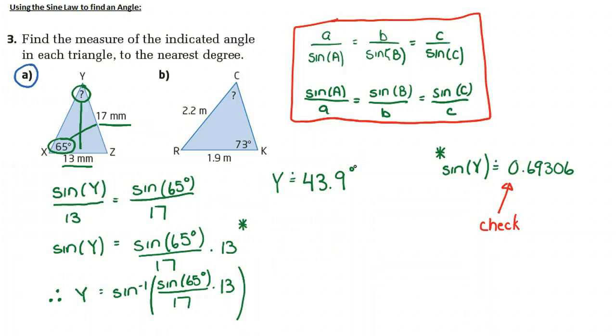And again, I can look at this, and I can see that if I have 65 degrees, it's across from 17 millimeters. And since 13 millimeters is less than 17 millimeters, this angle Y should be less than 65 degrees. So on this quick little check, this does at this point make sense. I hope that helped.